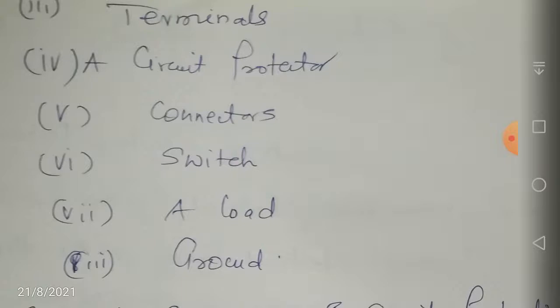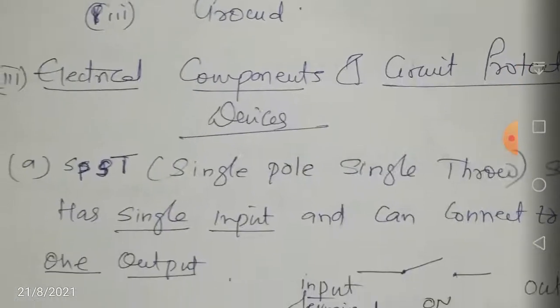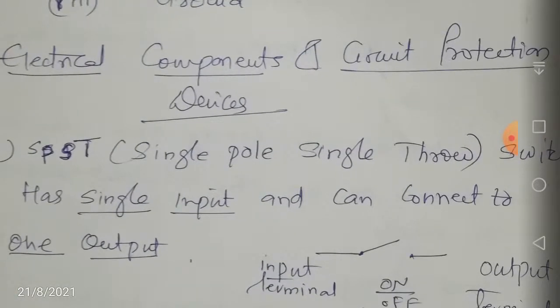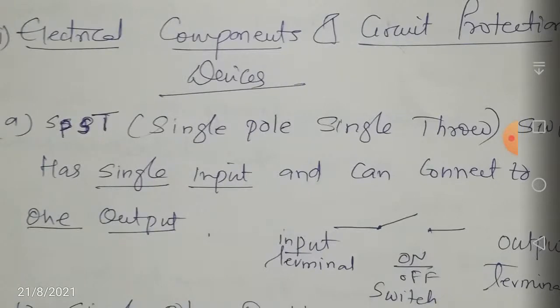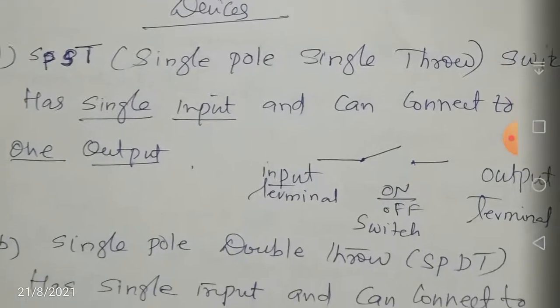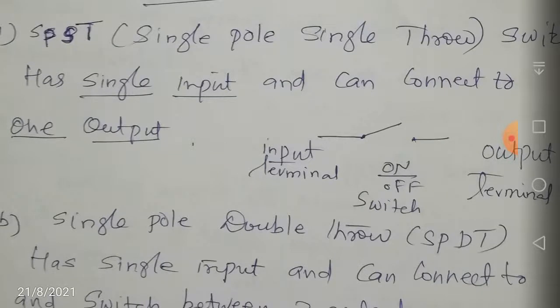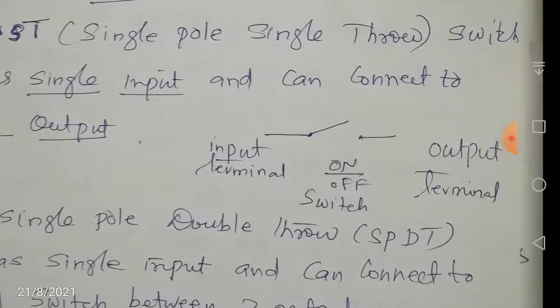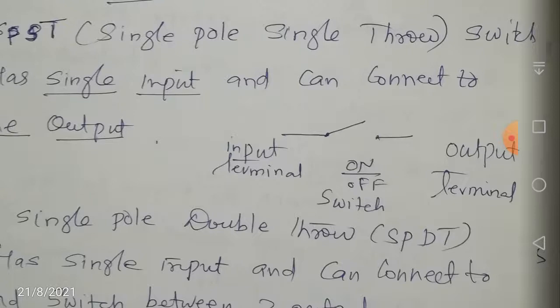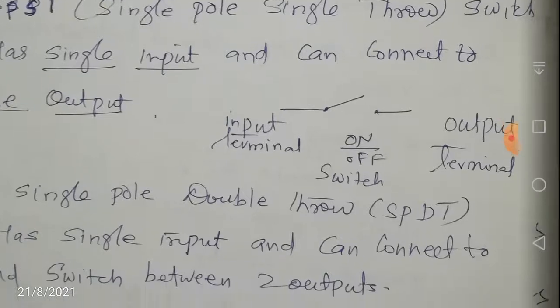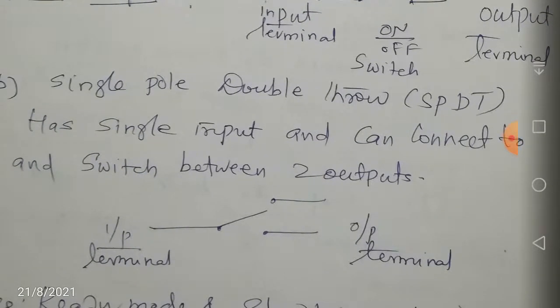Now let us talk about electrical components and circuit protection devices. There is something called SPST — Single Pole Single Throw. The SPST switch has a single input and can connect to only one output. As you can see from the diagram, there is one input terminal and one output terminal. By closing the switch, the electric energy flows from the input terminal to the output terminal. That is the function of the SPST switch.